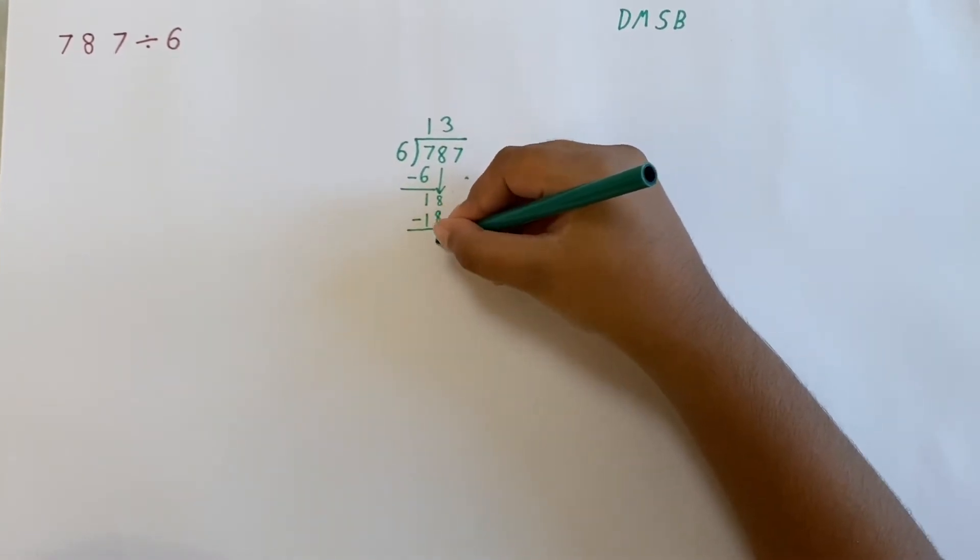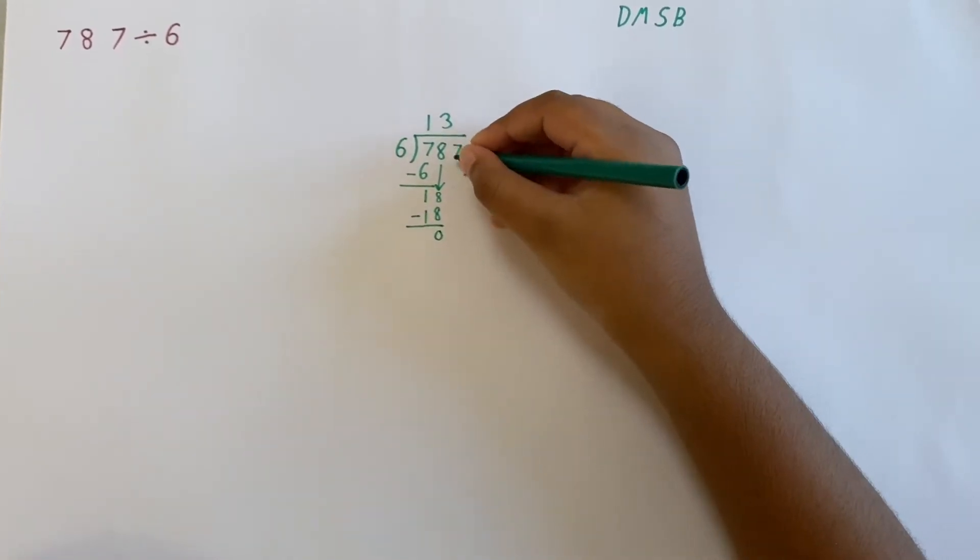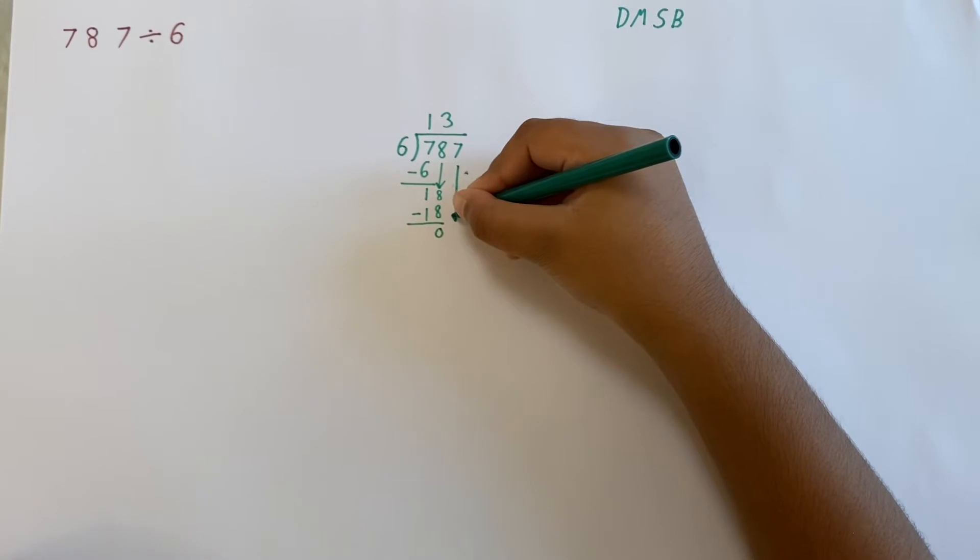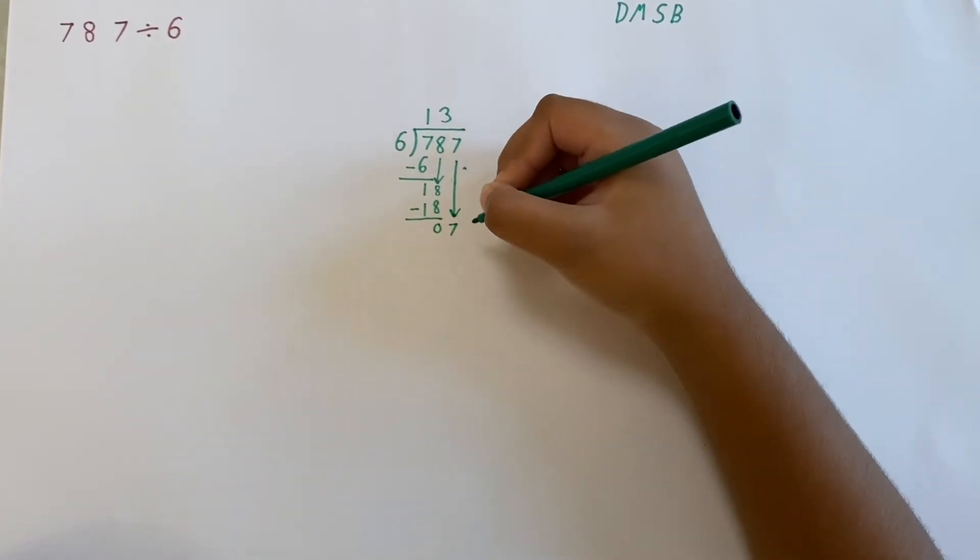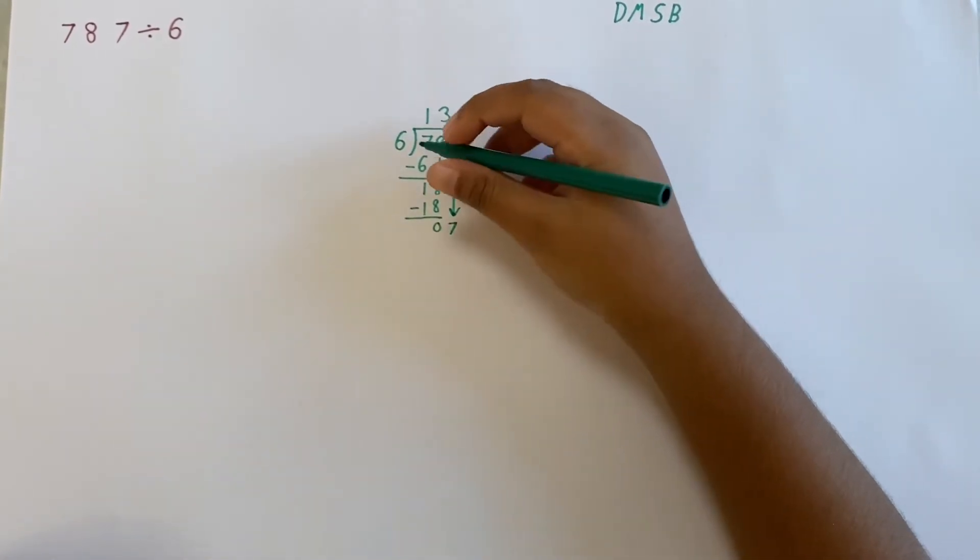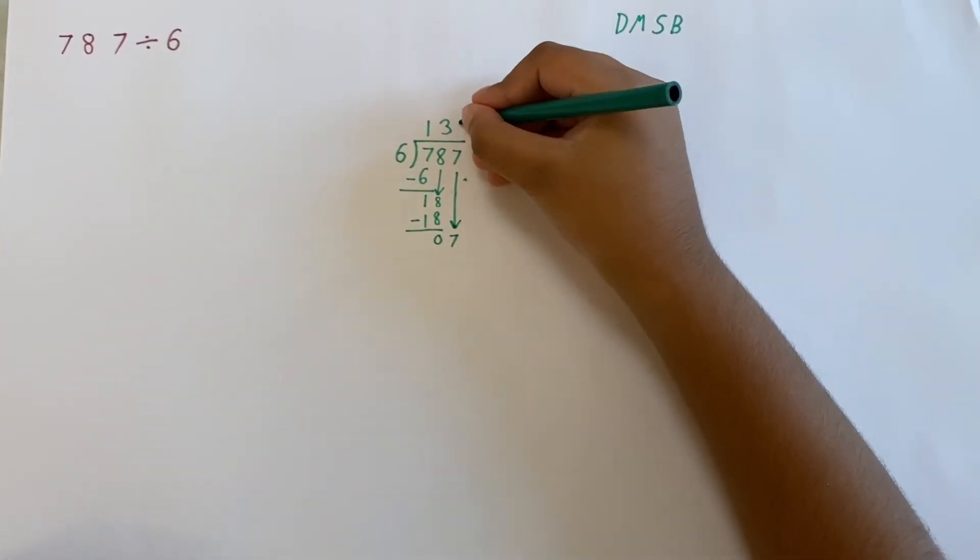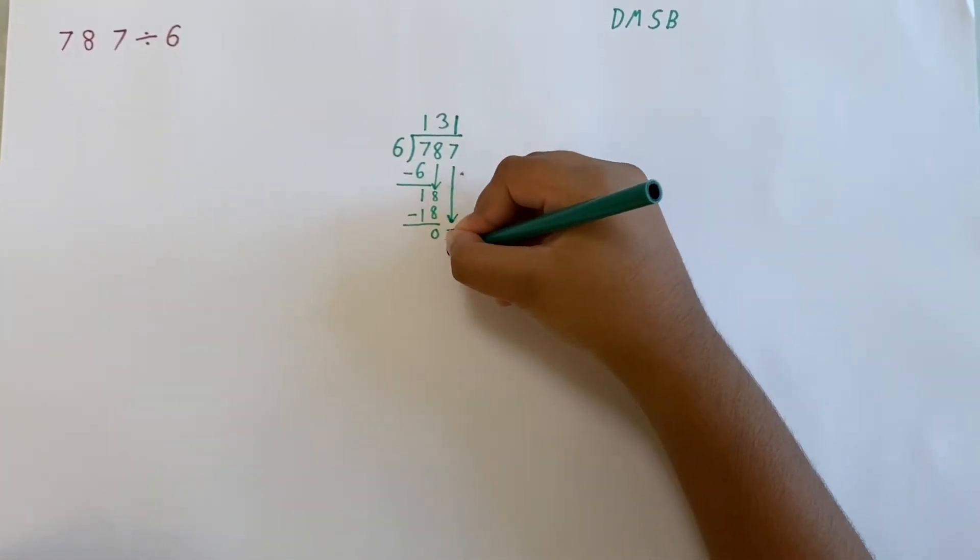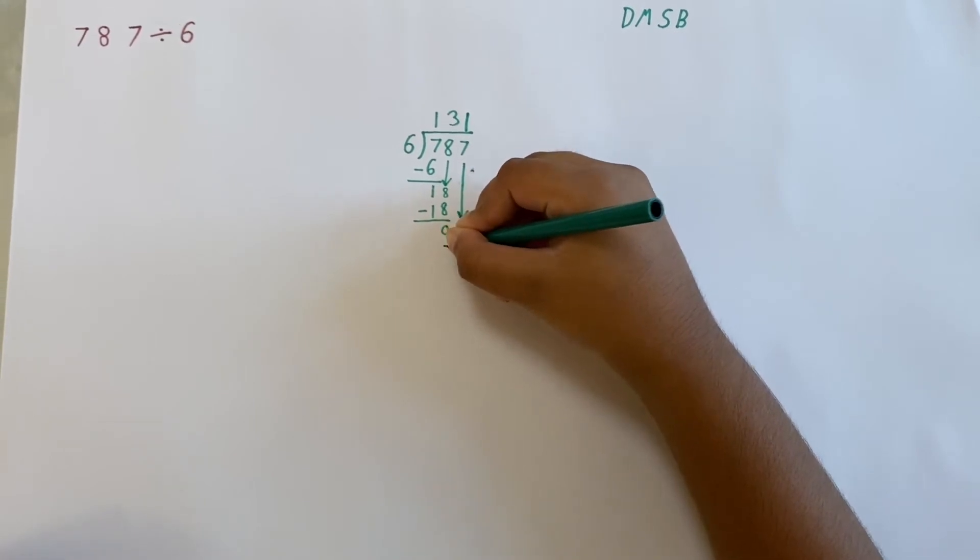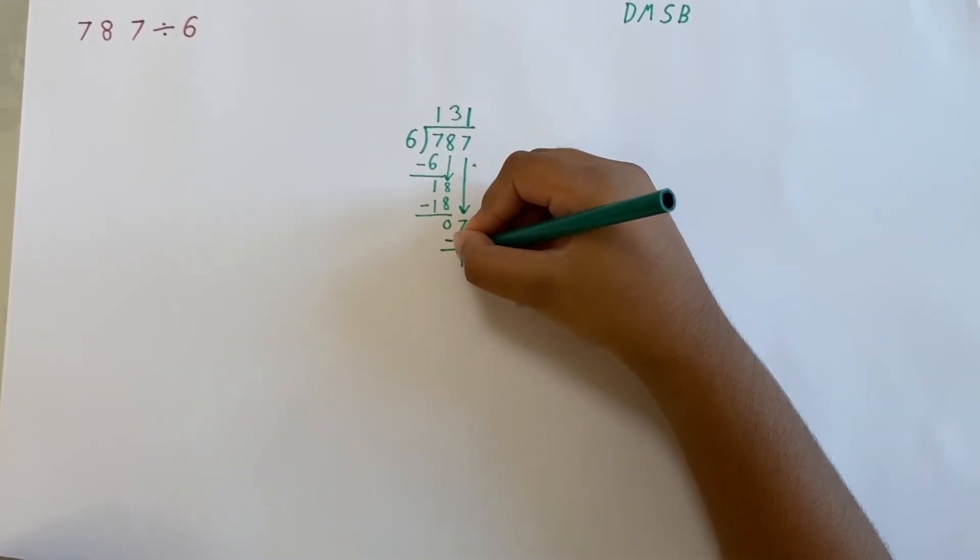Now we bring down the 7 to make our remainder at 7. Now we do 6 times 1 equals 6. 7 subtract 6 equals 1.